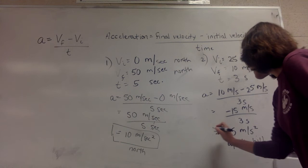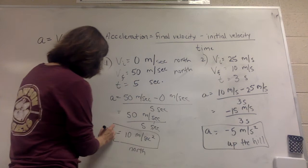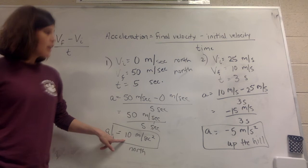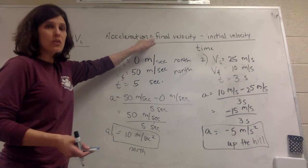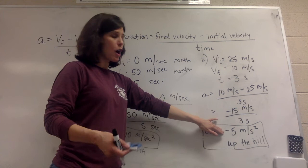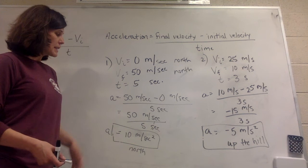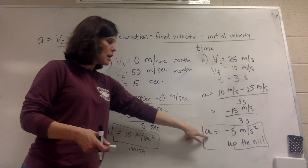That is the acceleration — or we might say the deceleration — of the roller coaster. Notice we calculated two accelerations: one is positive, 10 meters per second squared north, and this one we got negative 5 meters per second squared up the hill. It is okay to have a negative acceleration. You're always going to plug in and do final velocity minus initial — sometimes that means you end up with a negative number. A negative acceleration means the object is slowing down — it's a deceleration. A positive number means the object is speeding up. Always do final minus initial, and if you calculate a negative number, that simply means the object is slowing down instead of speeding up. And that's all there is to acceleration.